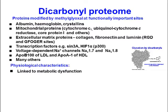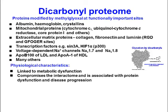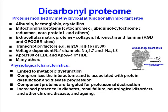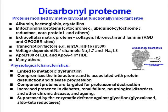The physiological characteristics of these proteins are that the dicarbonyl proteome is linked to metabolic dysfunction. It compromises the interactome and is associated with protein dysfunction and disease progression. Component proteins are targeted for proteasomal destruction. These proteins are increased in diabetes, renal failure, neurological disorders, and other chronic diseases and aging. The dicarbonyl proteome is suppressed by the enzymatic defense against glycation — the glyoxalase 1 system and aldo-keto reductases.